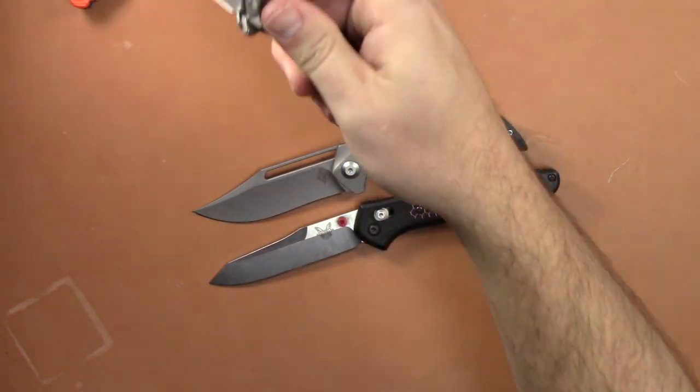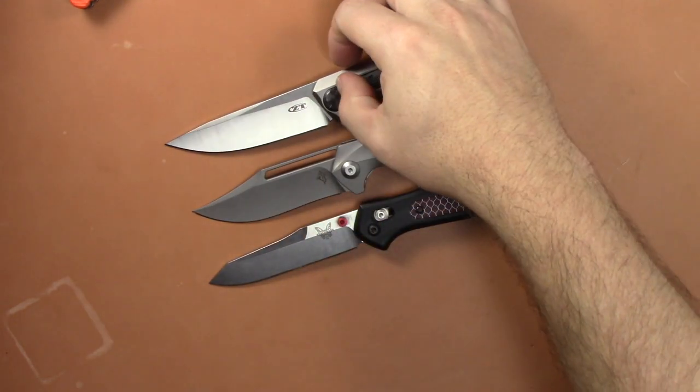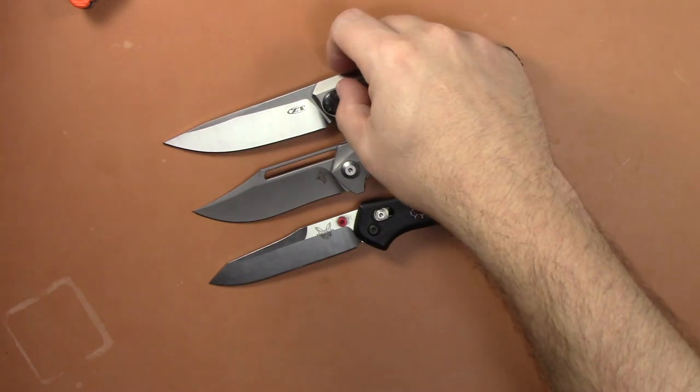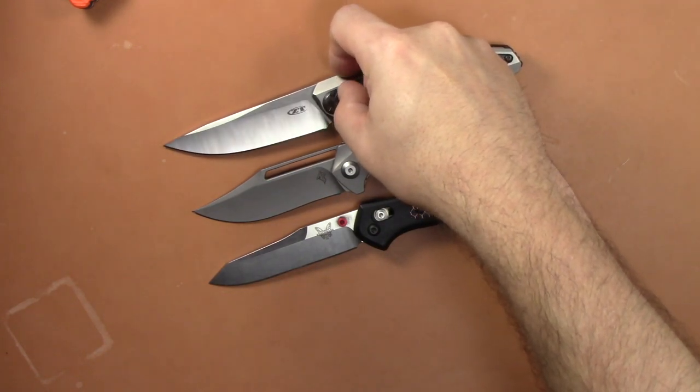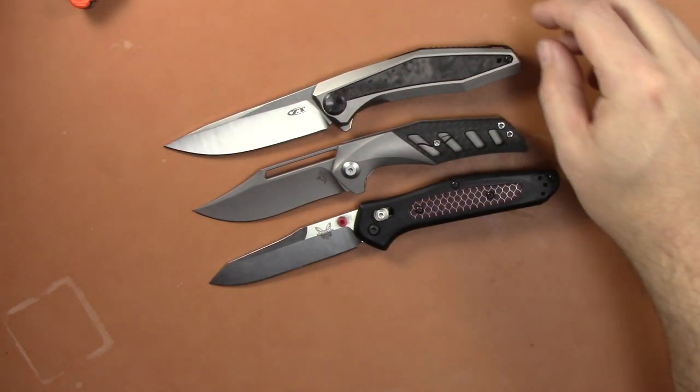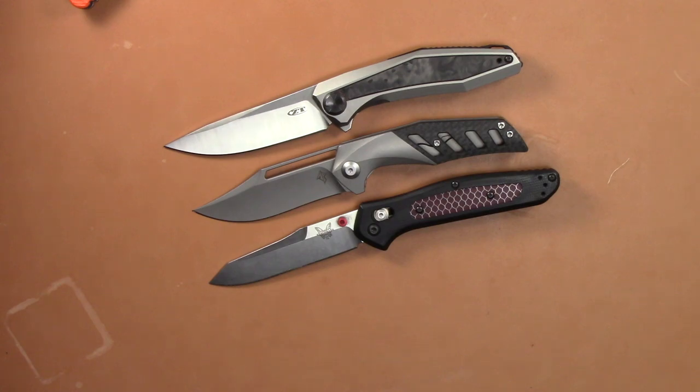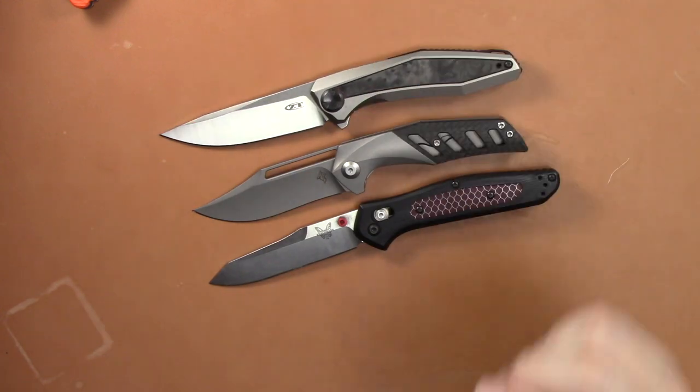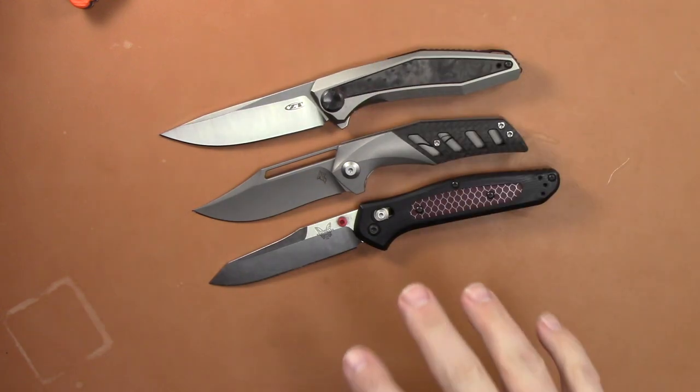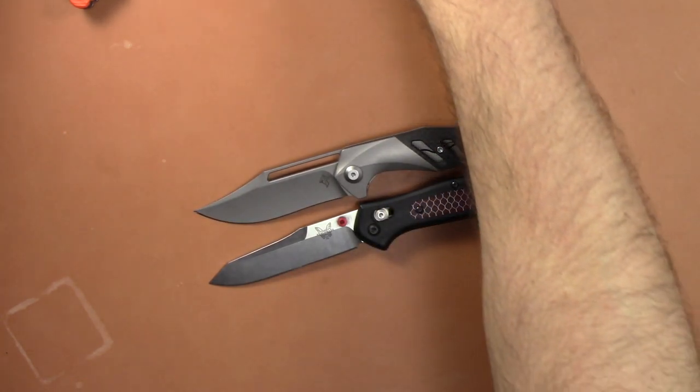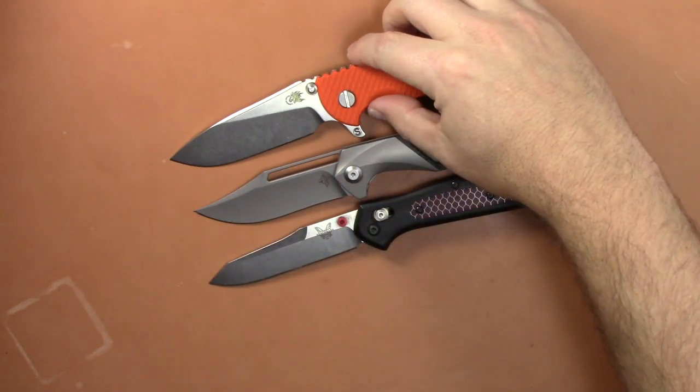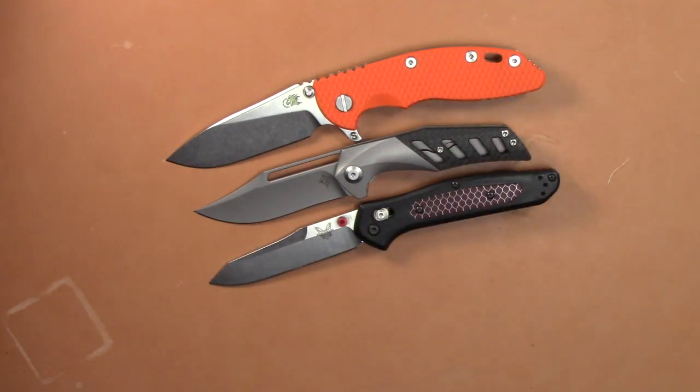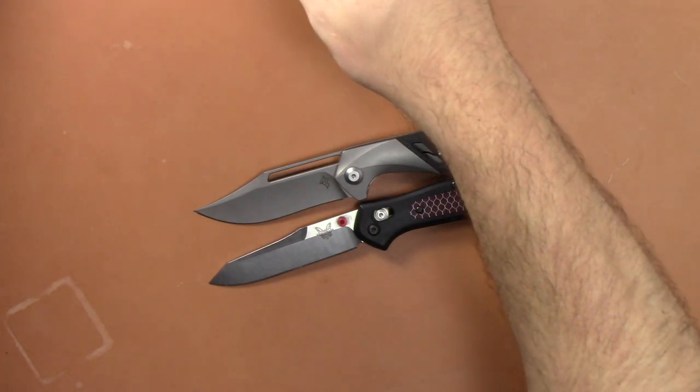The ZT, god I got some gunk on there. I got some of that like Loctite stuff on there on accident. Oh my gosh I cannot get it out of there. Anyway, that's the new Sinkovich Design 470 and it's a little bit bigger than that, barely. So it's a smaller knife for sure. One more, the Hinderer XM-18, just to give you a size. So it is a smaller knife.